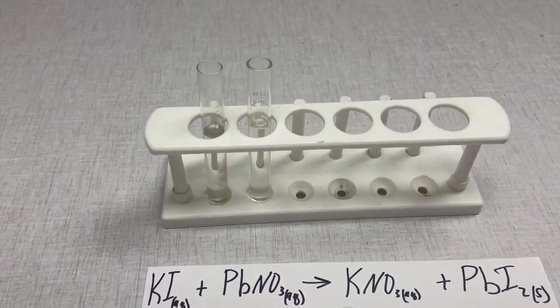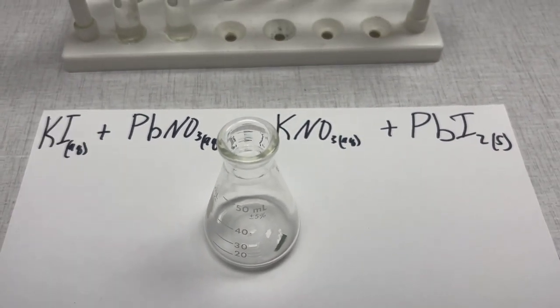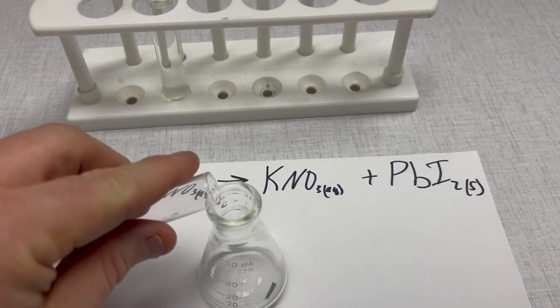Now what we're going to do is we're going to put them together into this flask and we're going to see what happens. So first we'll put the KI in.